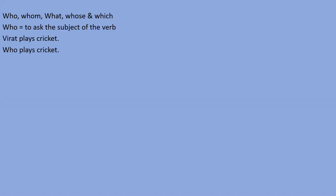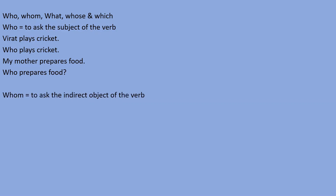Now let's understand how to use these words. Who is used to ask about the subject of the verb. For example, 'Virat plays cricket' — Virat is the subject. If you want to ask about the subject, use who: 'who plays cricket?' Another example: 'my mother prepares food' — my mother is the doer, the subject. So 'who prepares food?' — who asks about the subject.